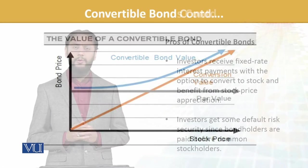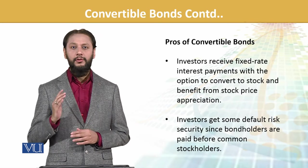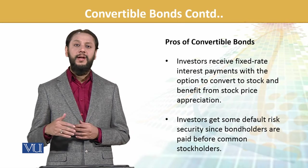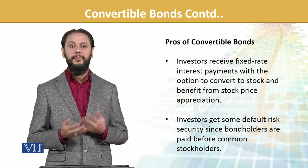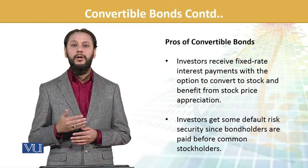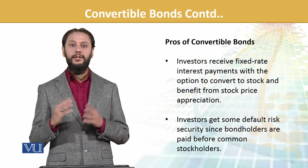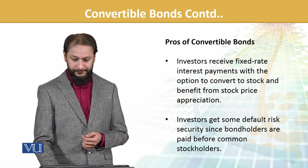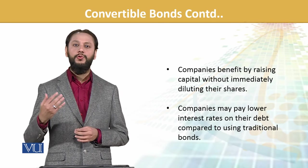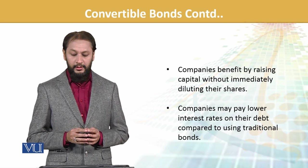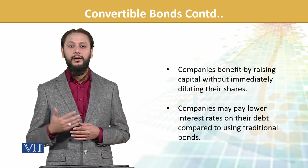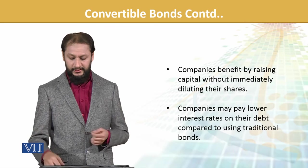Pros of convertible bonds: investors receive fixed interest payments — since it is a bond, fixed coupon payments are received, giving a simple advantage. Investors also benefit from stock price appreciation — as stock price rises, conversion value rises too. Investors get some default risk security since bonds are paid before stock; bondholders get payment before shareholders in case of default. Companies benefit by raising capital without immediately diluting shares — no dilution impact. Companies may also pay a lower interest rate on their debt, as they give a lower coupon in exchange for the conversion feature.